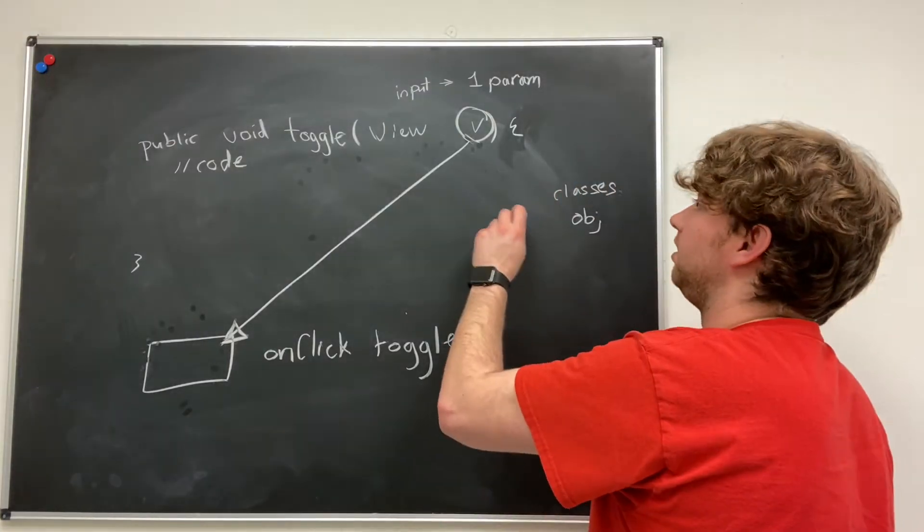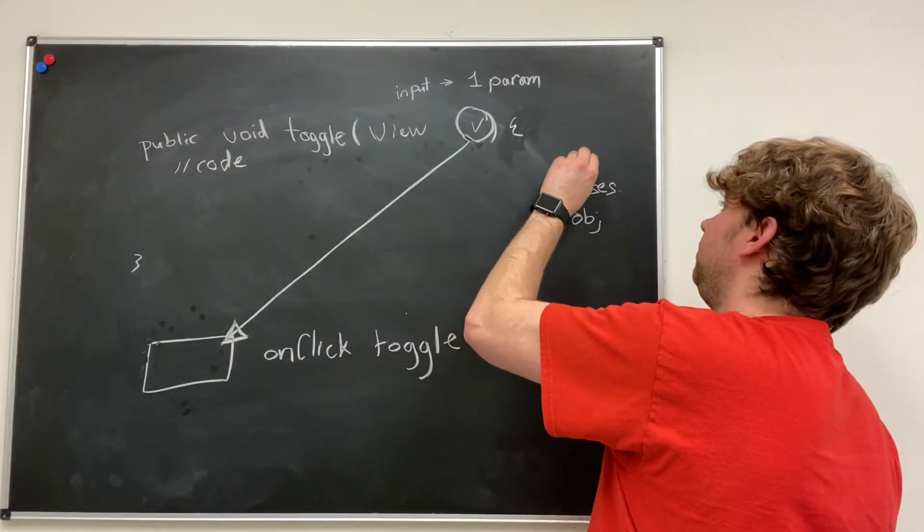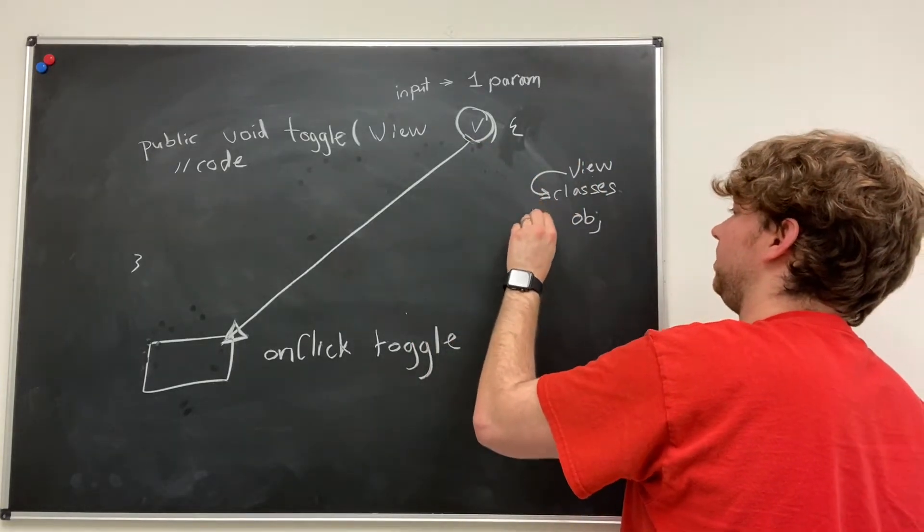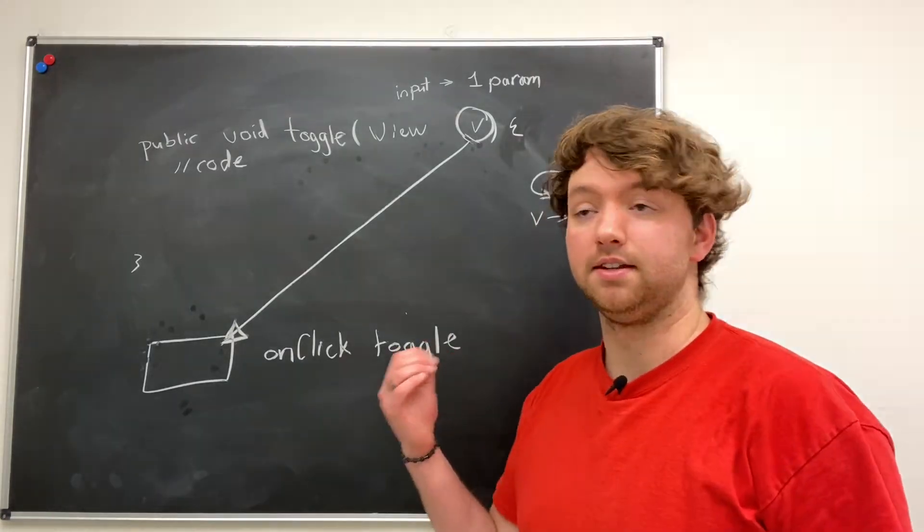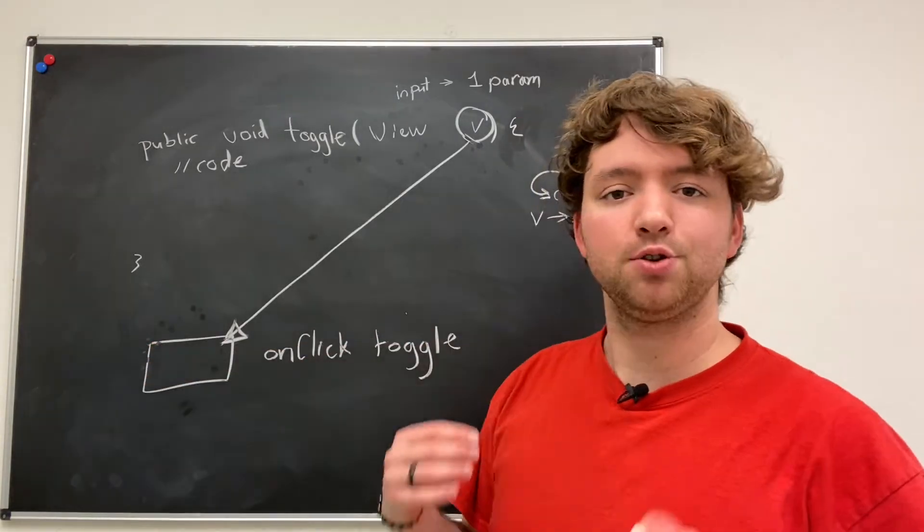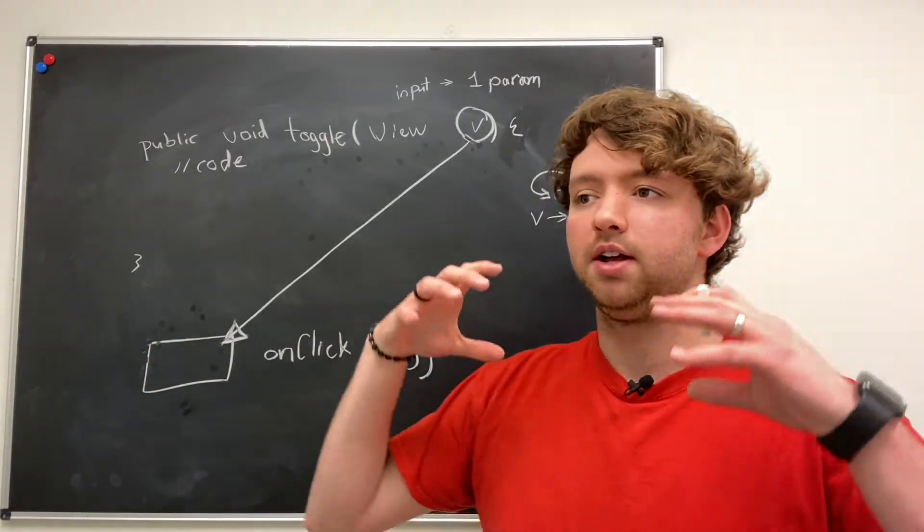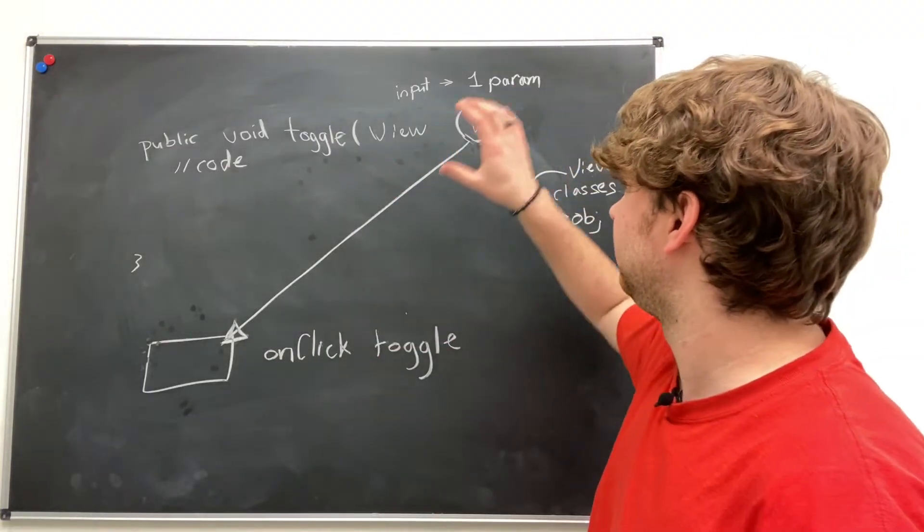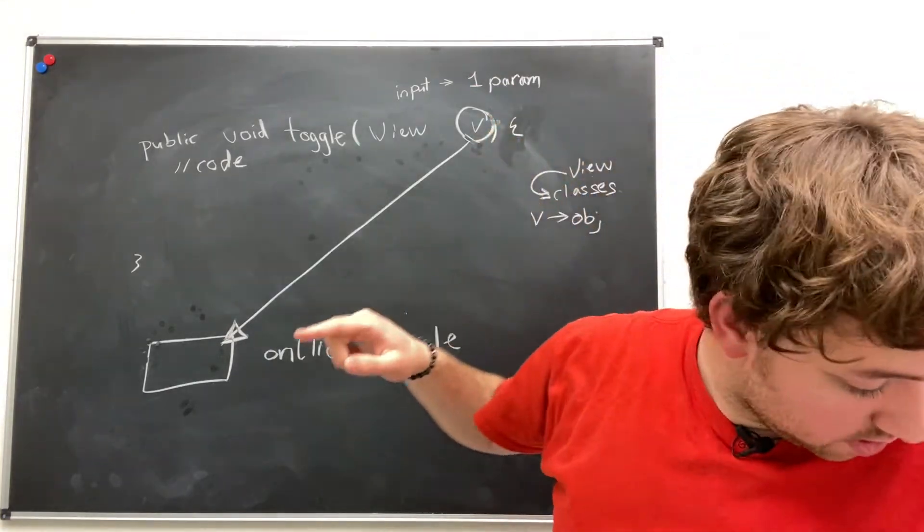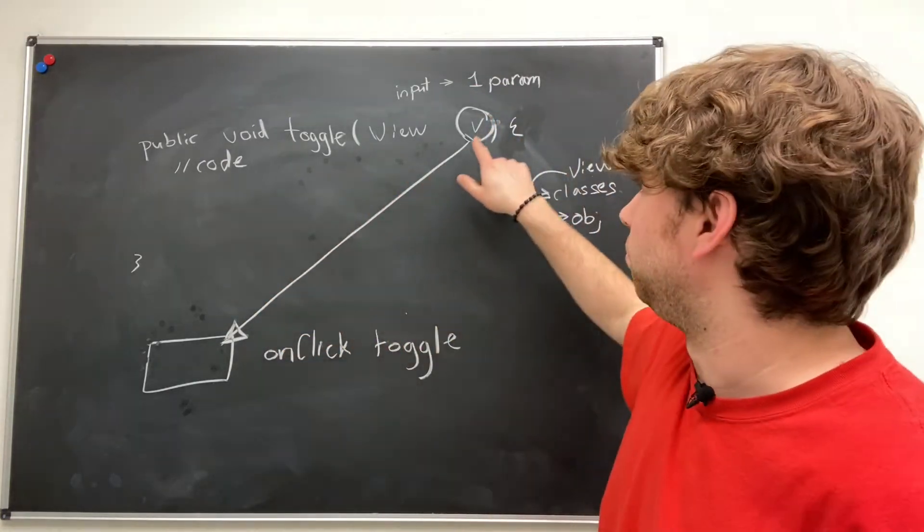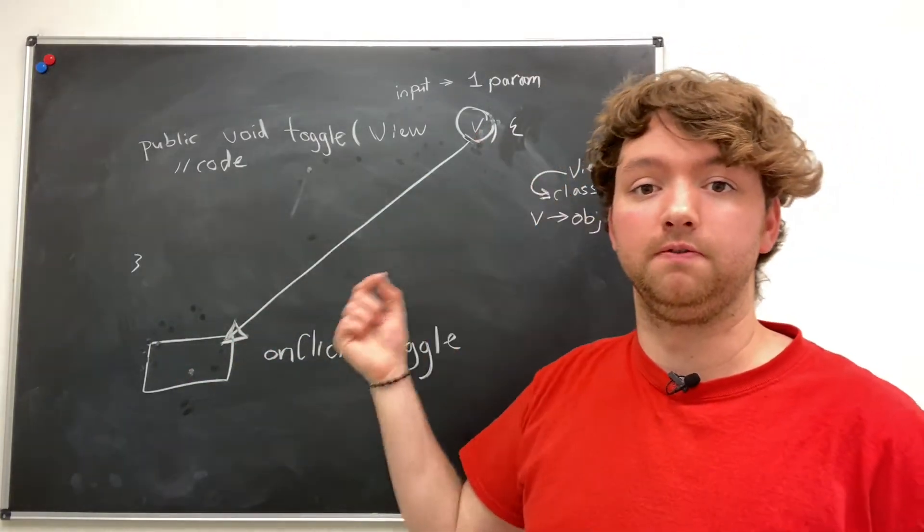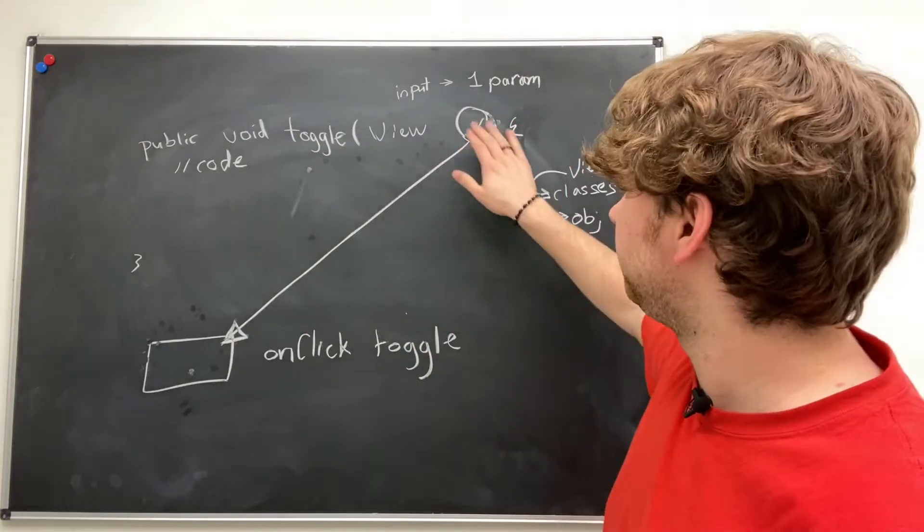So the class here is view. The object here is V. So V is an instance of this view object. So when we see a button like this, it's actually just a visual representation of some entity in memory known as an object. And we get a reference to it and name it V here. So that means we can work with this button in code through this variable V. And the variables type is a view.